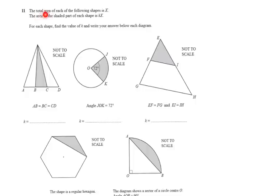What's going on? They say the total area of each of the following shapes is X. So the area of the entire shape is X. The area of the shaded part of each shape is KX. And as you can see, the shaded part is less than the entire area. So K is going to be a fraction or a decimal every time, perhaps half or a third or a quarter or whatever times the entire area. For each shape, find the value of K and write your answer below each diagram.